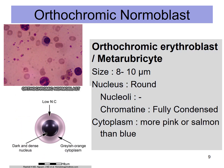The orthochromic normoblast is also called metarubricyte. It is sized around 8 to 10 micrometers with a rounded nucleus. It also has no nucleoli. Its chromatin is even more condensed than the polychromatophilic one. The cytoplasm is pink or salmon rather than blue.